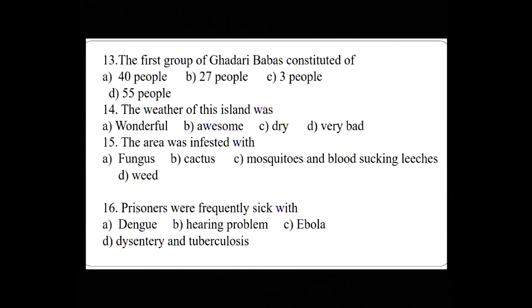Later, more than 30 from the Lahore supplementary conspiracy case and Mandalay conspiracy case followed. You must be wondering why they were called Babas — because, unlike other groups, many of the Gadar prisoners were quite old: Nidan Singh was 60, Kehr Singh 62, Kala Singh 55, Gurdit Singh 50, and many including Baba Son Singh Pakna were 45 and above. They were addressed as Babas with respect. The weather on the island was very bad — it was infested with mosquitoes and blood-sucking leeches, and food was bad and inadequate. Many prisoners frequently suffered from dysentery, high fever, tuberculosis, and asthma.